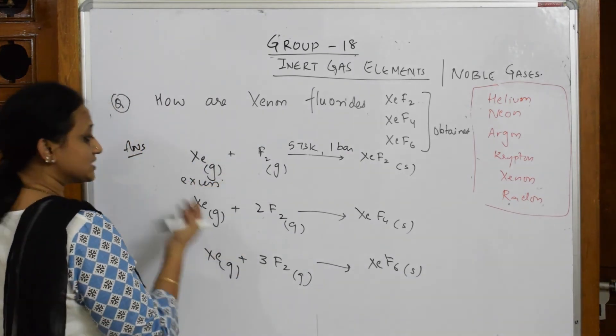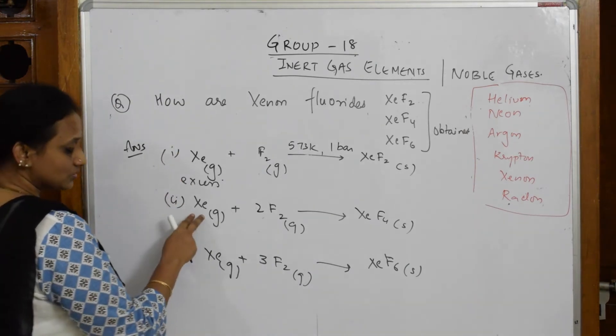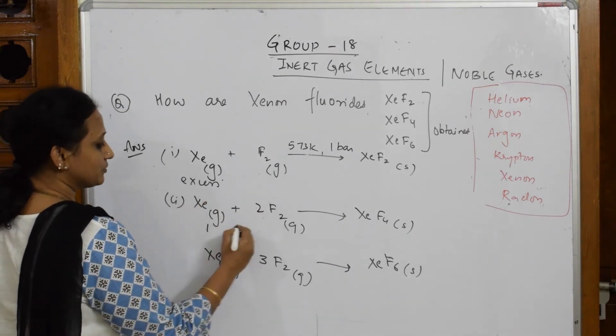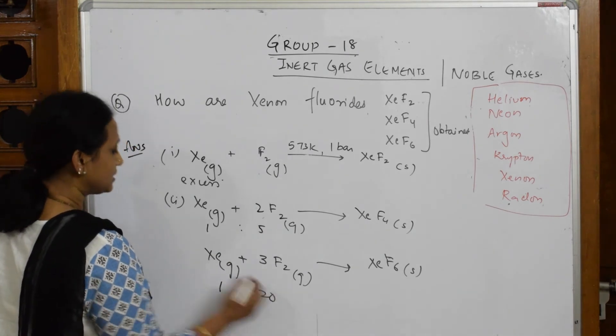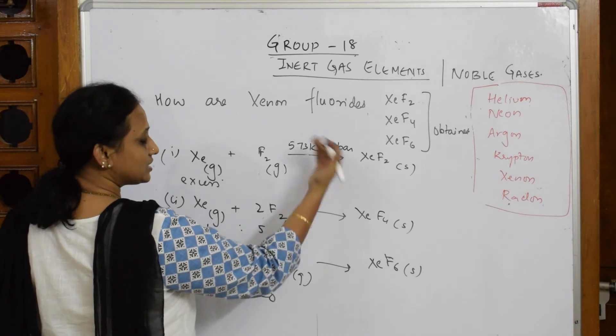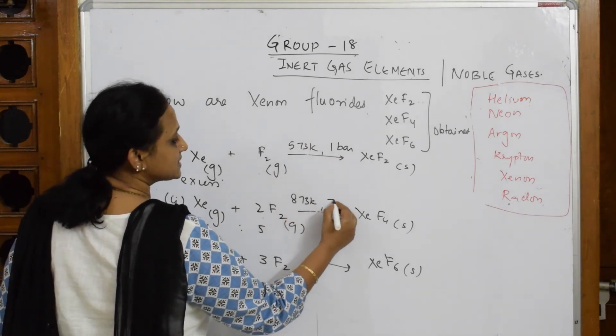When I come back to the second reaction, this is your first reaction, this is the second compound. This particular xenon, we are going to mix up in the ratio of 1:5. This in the ratio of 1:20. This would be your third reaction. This is 573, a bit higher, 873 Kelvin, and this would be 7 bar.